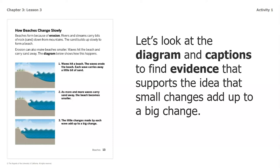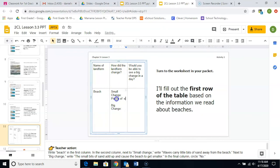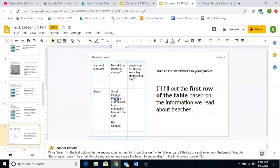We've already looked at the diagram and the captions to find evidence. When you're doing this on your own, it's important not just to read the pages, but also to look at the pictures, look at the captions, and try to make sense of what's happening in those. The first column is the name of the landform — I'm going to write beach because that is the landform we are focusing on. For the small change: pieces of eroded rock from mountains flow into the ocean, making sand.